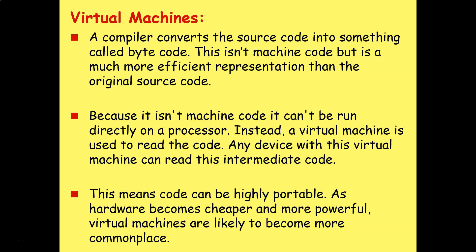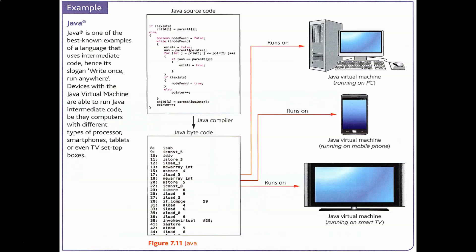Because bytecode isn't machine code, it can't be run directly on a processor. Instead, a virtual machine is used to read the code. Any device with this virtual machine can read and run this intermediate code, meaning the code can be highly portable. As hardware becomes cheaper and more powerful, virtual machines are likely to become more commonplace. Java is one of the classic examples — you write your Java source code, but you're not trying to run it on lots of different machines because they're not going to be compatible.